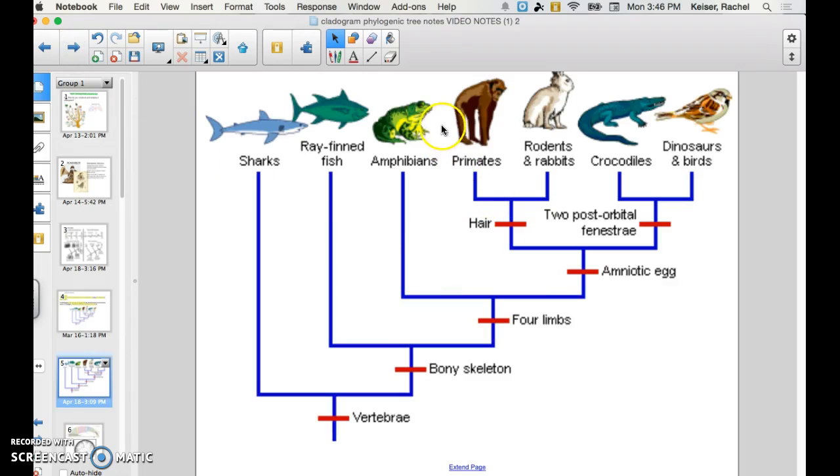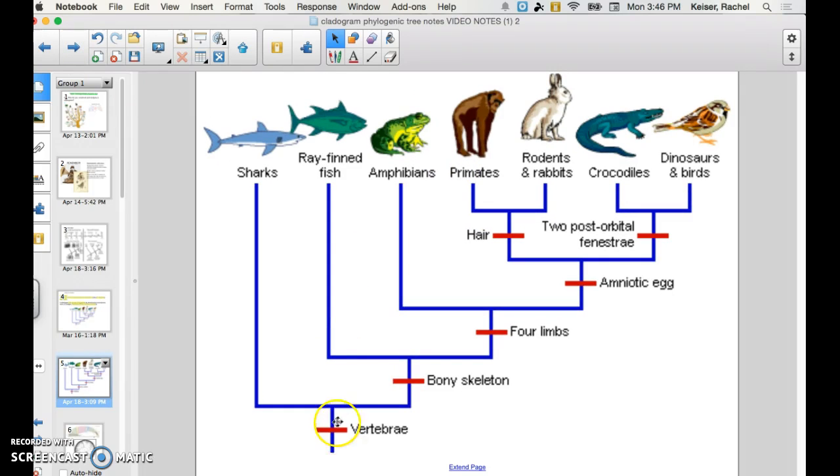So let's take a look at this cladogram right here. Here we have a cladogram showing the evolution of various species and their relatedness of the traits that they have. So at these certain nodes here, you have when certain traits arose in evolutionary history. And so as you can see, the closer they are together on a cladogram, the more related they are and the more traits that they share. And the more recent common ancestor they have.